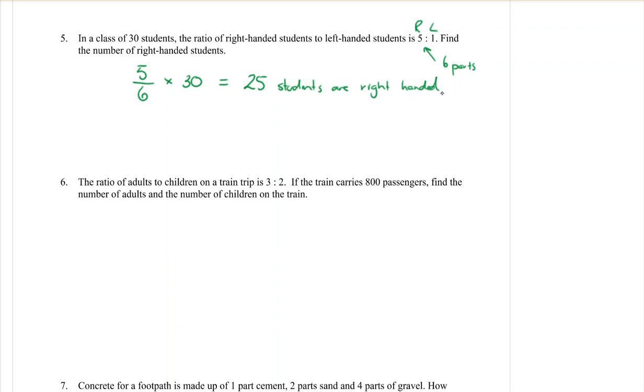Question 6: The ratio of adults to children on a train is 3 to 2. As soon as I look at that, I go there's 5 parts, and you can even go adults to children, so you know which one is which. If the train carries 800 passengers, find the number of adults and the number of children on the train. So I do want both of them this time.